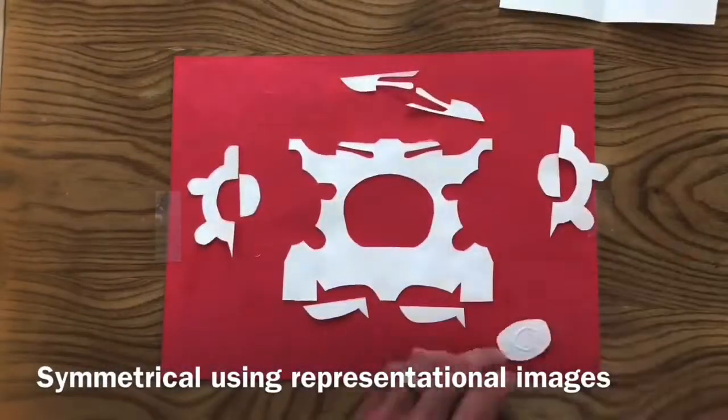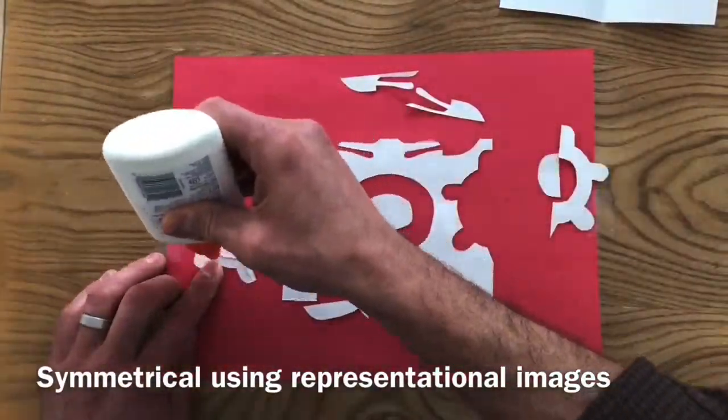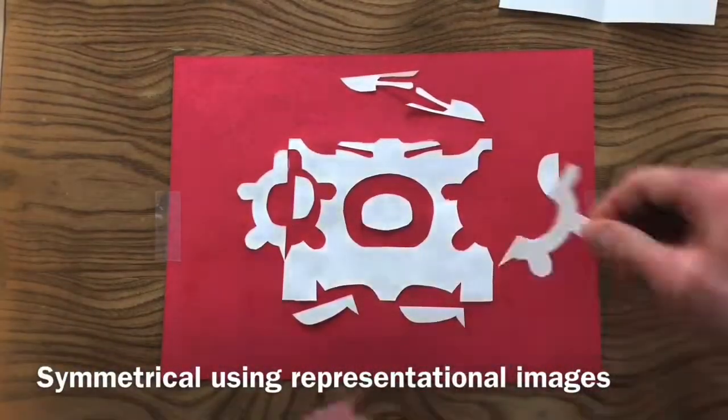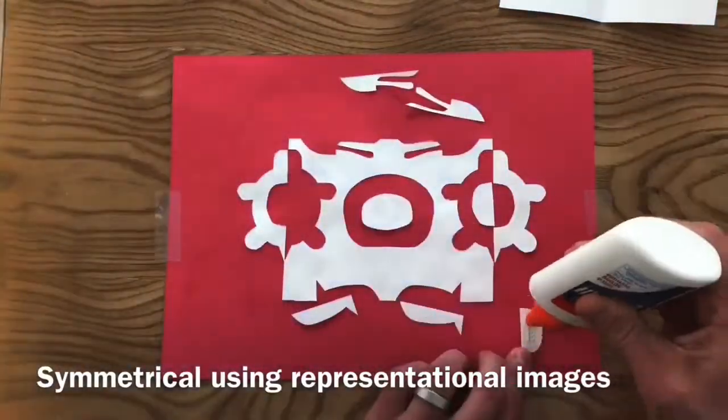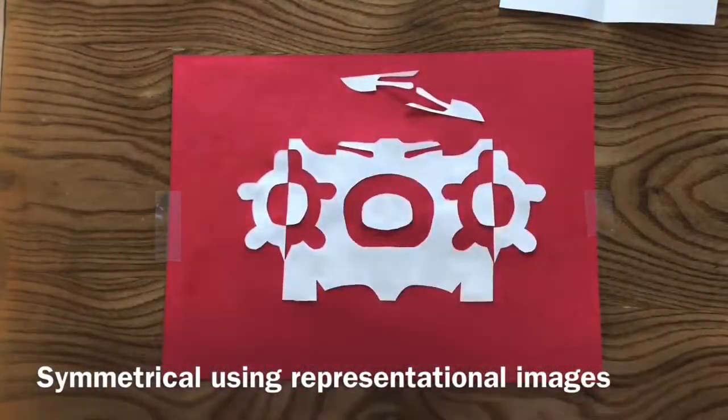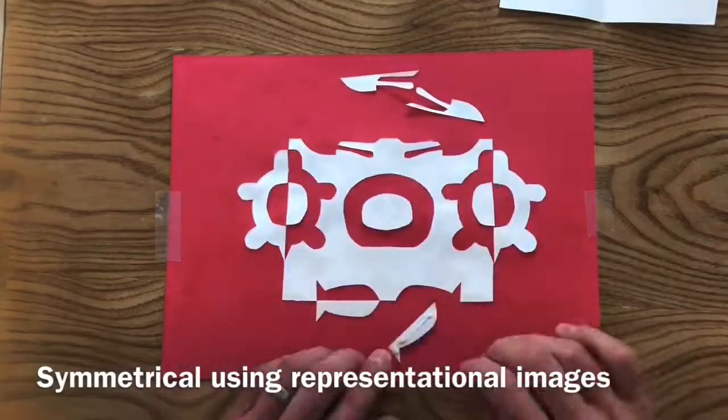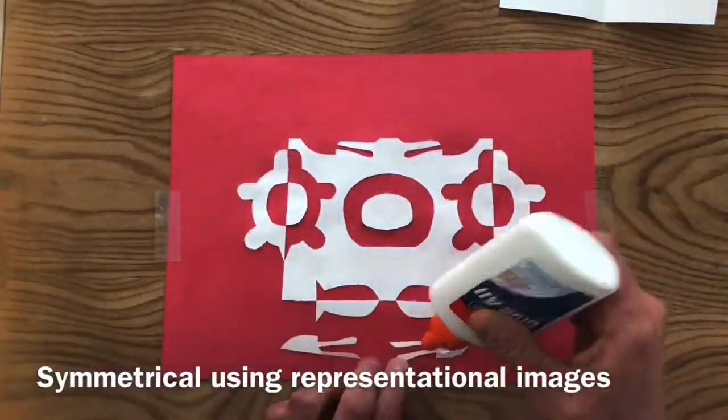When you are gluing down your pieces, as always, be sure to glue the correct side. So flip your piece over, glue the back side, and make sure all your different pieces line up along the edge of the paper to create a line of symmetry or an equal line that divides both pieces in half.